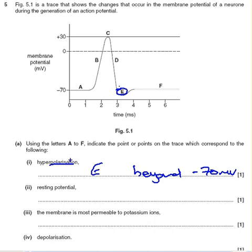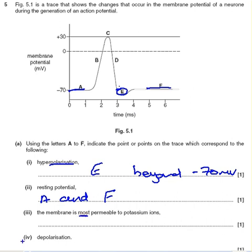Now resting potential — we've got two things here. Resting potential is where it stays at the baseline. If you put down only A you're wrong, if you put down only F you're wrong. You must put down A and F, because both those points are resting potentials.